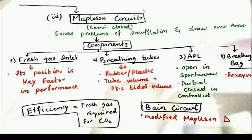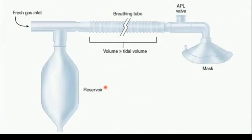Breathing tubes are normally made of rubber or plastic, and the volume of these tubes should be at least greater than the tidal volume of the patient.